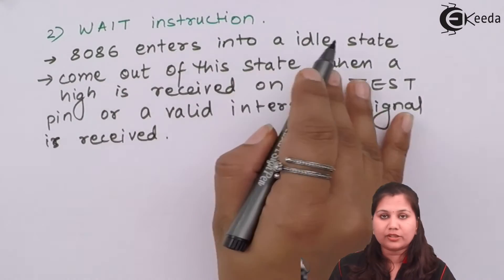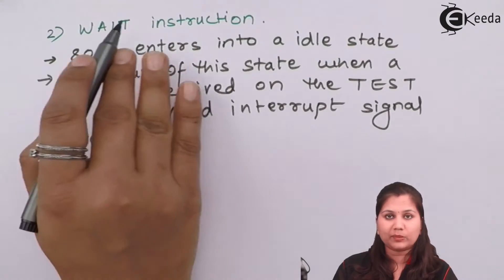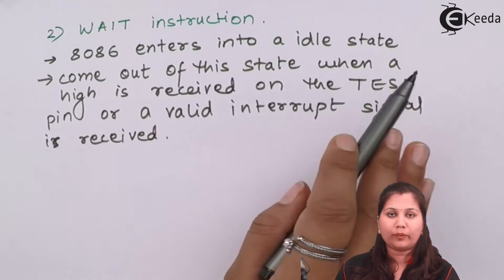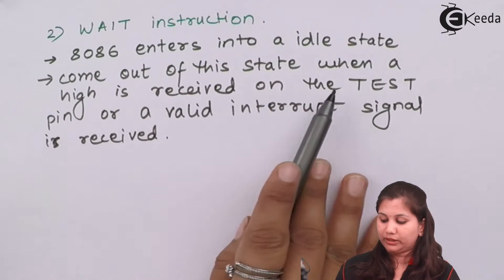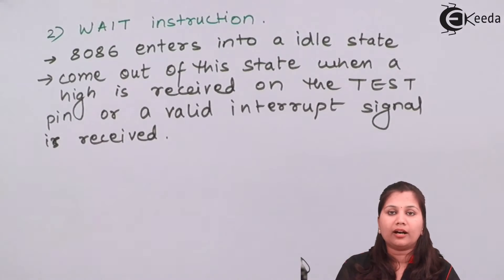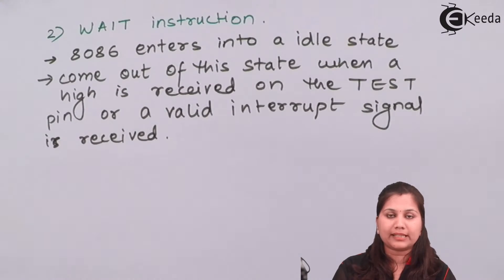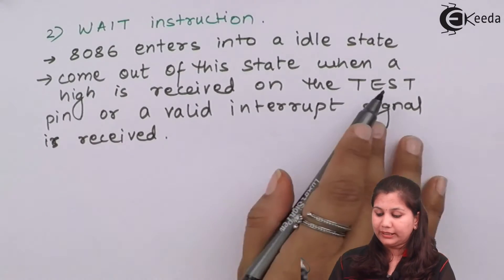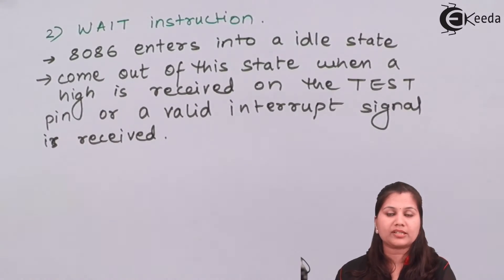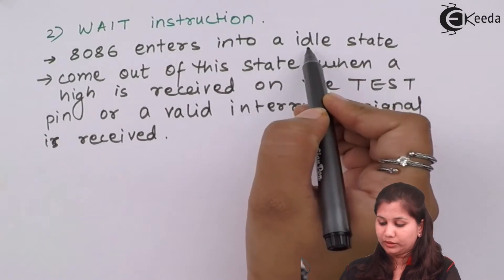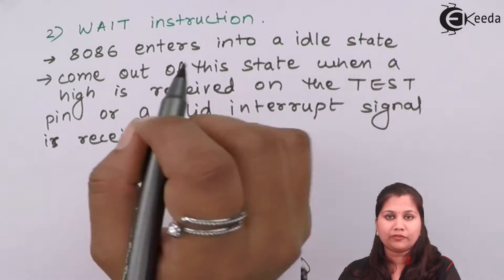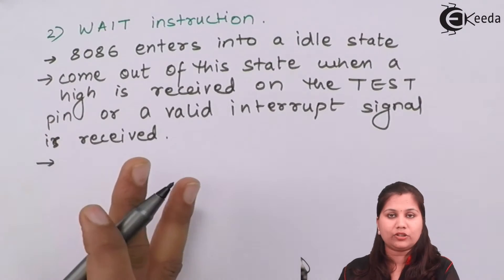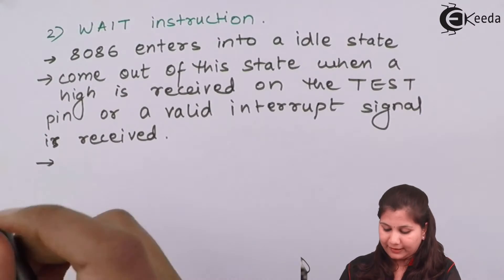The 8086 enters into the idle state due to the WAIT instruction, and it will come out of this state when a high signal is received on the TEST input pin, or a valid interrupt signal is received by the microprocessor. In these two conditions, the microprocessor will come out of this idle state. This instruction is used to synchronize the 8086 microprocessor with peripheral devices.